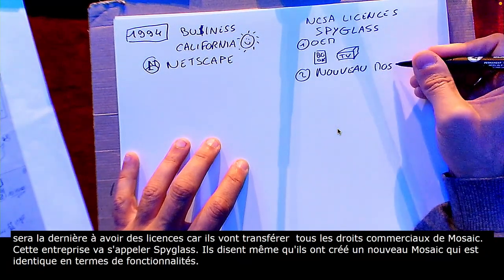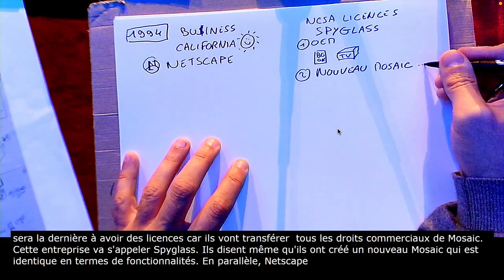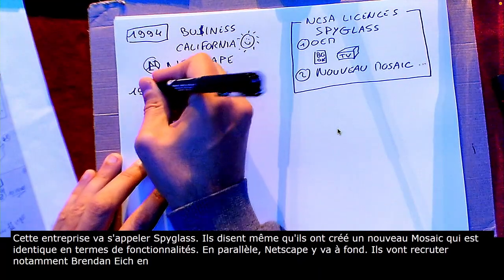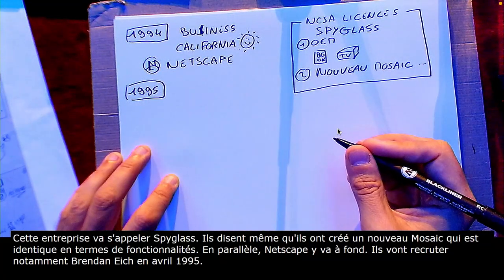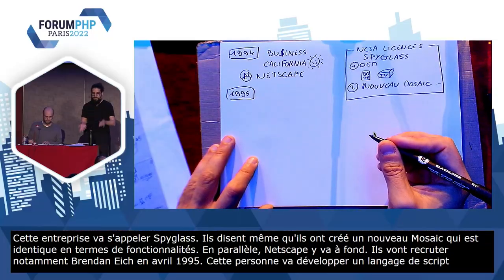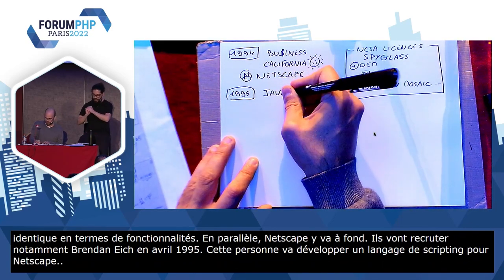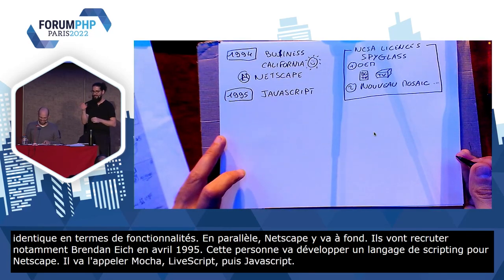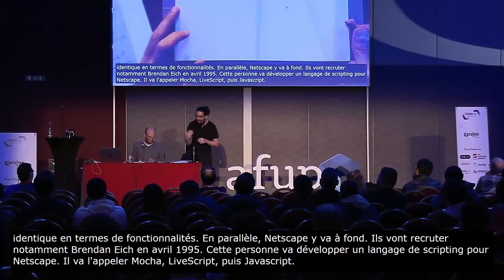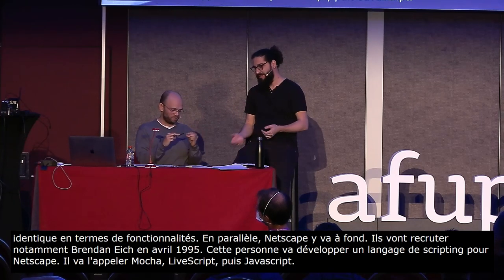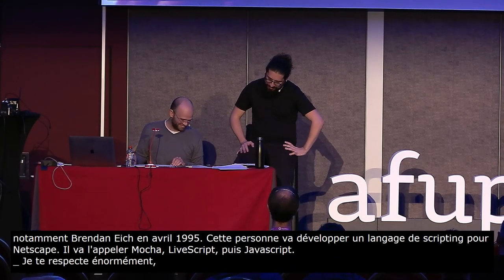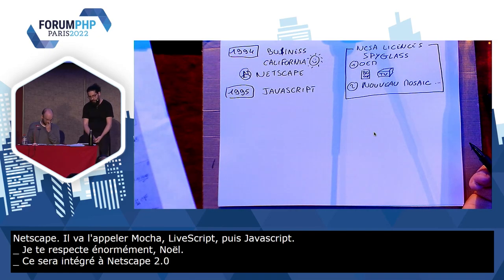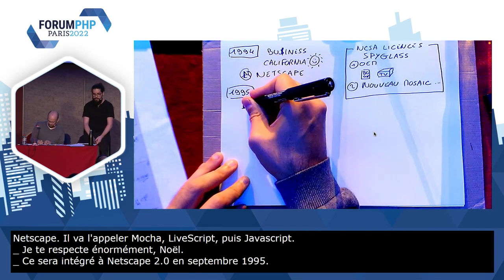En parallèle, Netscape, ils y vont à fond, ils ne font pas que recréer la même chose. Ils vont recruter notamment Brendan Eich en avril 1995, et cette personne va, en une petite dizaine de jours, développer un langage de scripting pour Netscape. Il va l'appeler Mocha, puis LiveScript, et finalement, pour surfer sur la vague de la mode à l'époque, JavaScript. Ça sera intégré à Netscape 2.0 en septembre 1995. Et ce n'est pas la seule chose qu'ils rajoutent dans Netscape. Il y a aussi les frames, un système de plug-in, énormément de choses. Là, on arrive vraiment sur un truc nouveau.